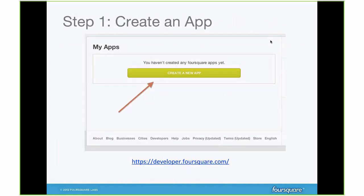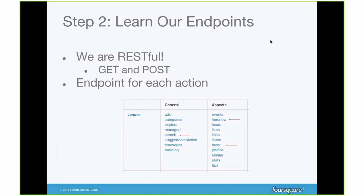So how do you use it? Step one: you have to create an app. Step zero is going to developer.foursquare.com and reading through our documentation. There's a button that says My Apps, and a large green button to create an app. Secondly, you need to learn our endpoints — we are completely RESTful, so all you need is to make HTTP requests to interact with our API. We have client libraries maintained by our community, but we don't release any official SDKs. There's an endpoint for each action: venue search, venues here now, venue menu, and so on.